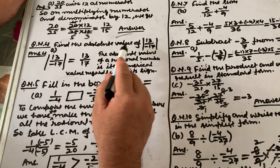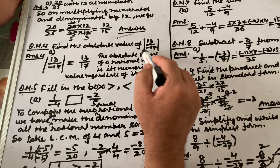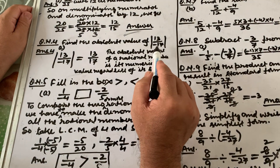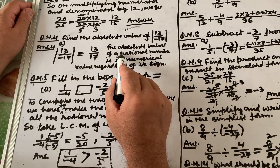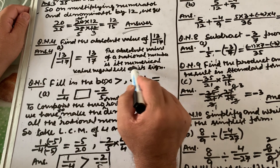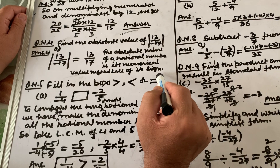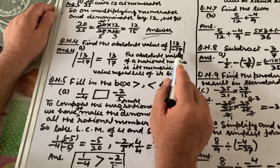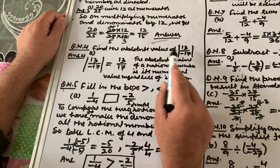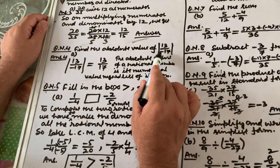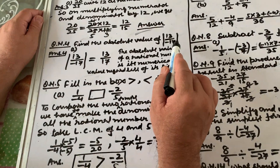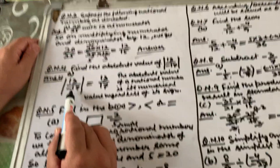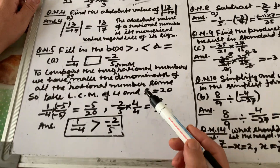Question number 4: find the absolute value of 13 upon −17. The absolute value of a rational number is its numerical value regardless of its sign — we neglect the sign and take the numerical value. So the absolute value of 13/(−17) is equal to 13/17. That is the answer.